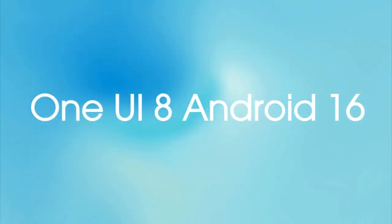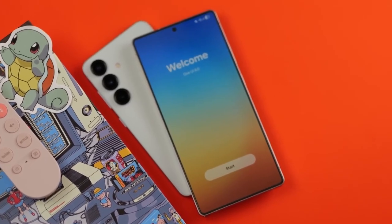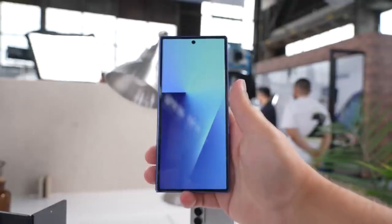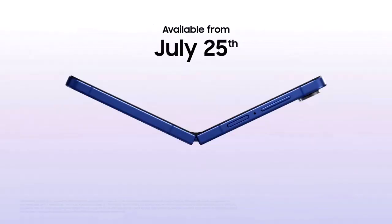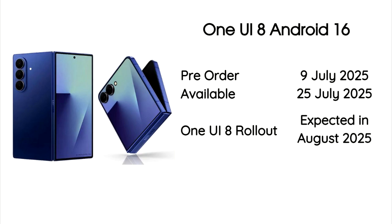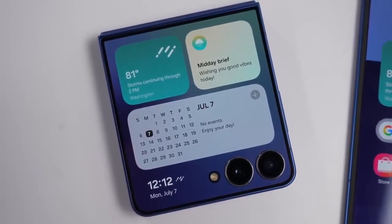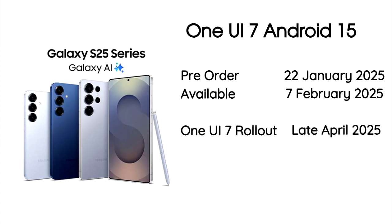With One UI 8, Samsung did exactly the same thing — they launched One UI 8, based on Android 16, with the new Galaxy Z Fold 7 and Z Flip 7 smartphones. Pre-orders for the Galaxy Z series started on 9th July and they become available to the general public on 25th July 2025. Once people experience One UI 8 on the new Z series phones, Samsung will start rolling out the One UI 8 Android 16 update to eligible Galaxy smartphones and tablets.